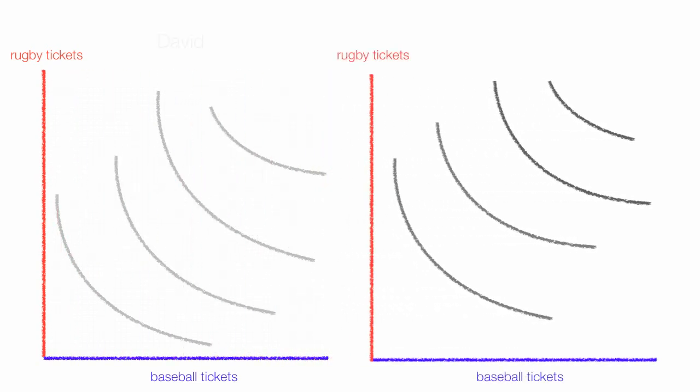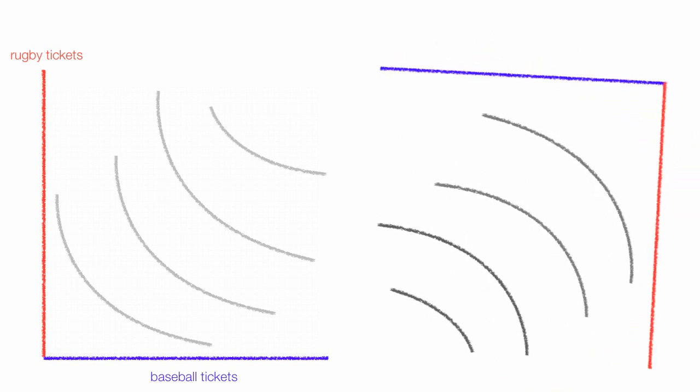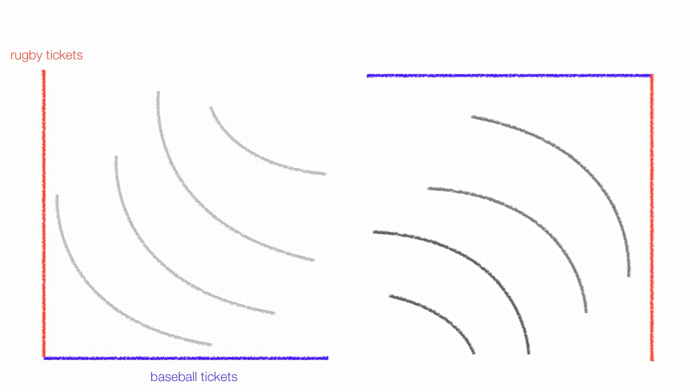It represents how two individuals would trade two different commodities, in this case, rugby tickets and baseball tickets. One of the indifference maps are just rotated 180 degrees and plotted right on top of the first one.